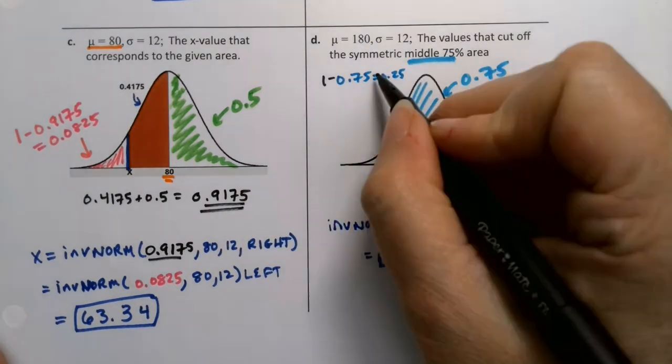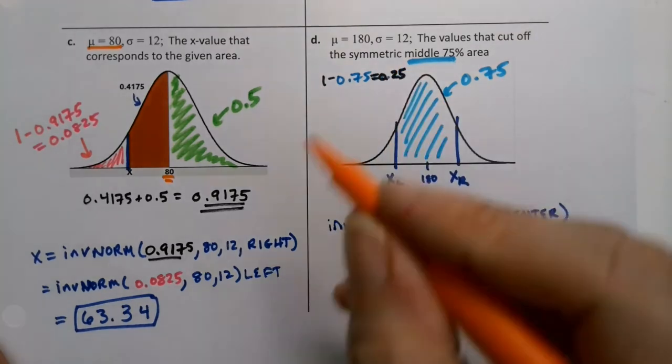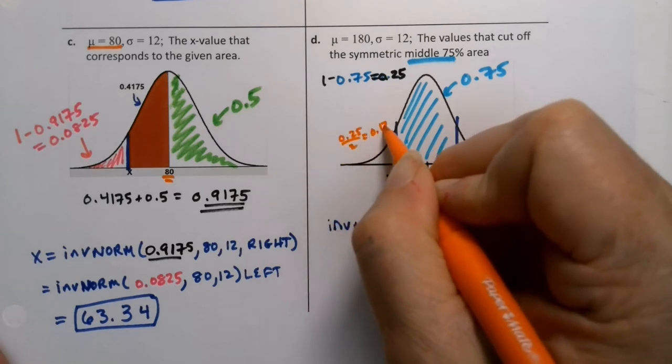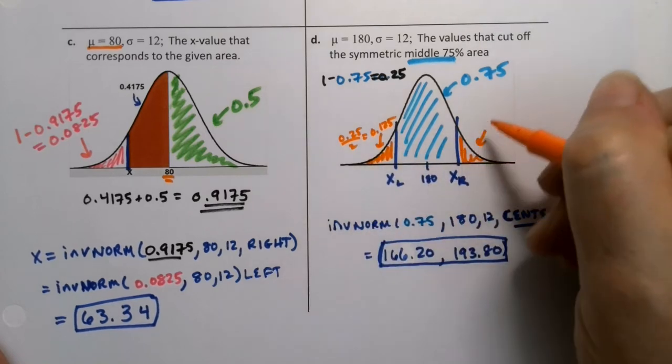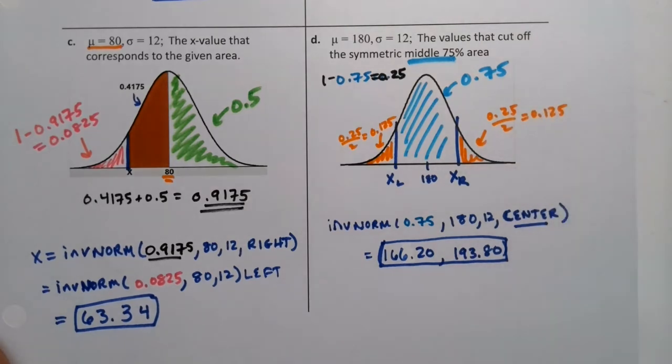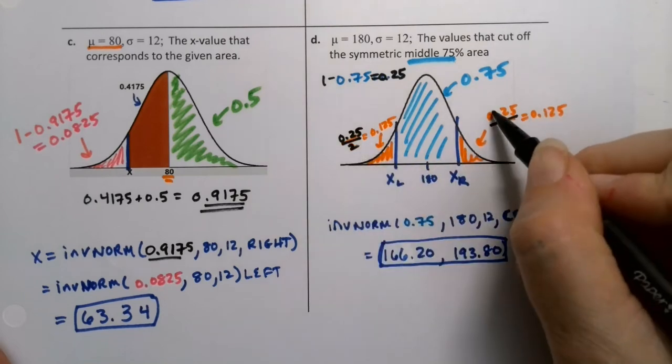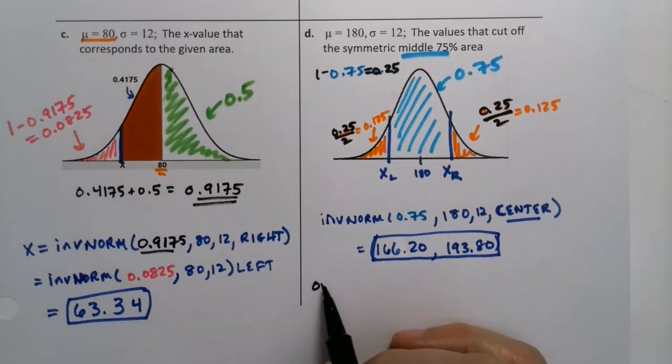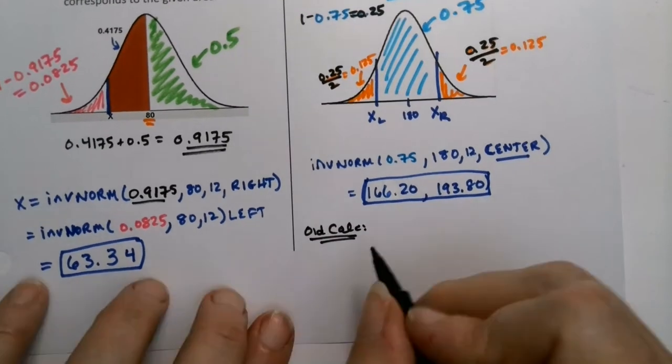So that means if 75% is in the middle, 25% is in the two tails, both of them. So that means each tail on its own is 0.25 divided by 2, which is 0.125. That's this tail over here and this tail over here. They're both 25 divided by 2, which is 0.125. And that's what we would use in inverse norm, the 0.125. Okay, so in an old calculator, this is what you'll have to do.